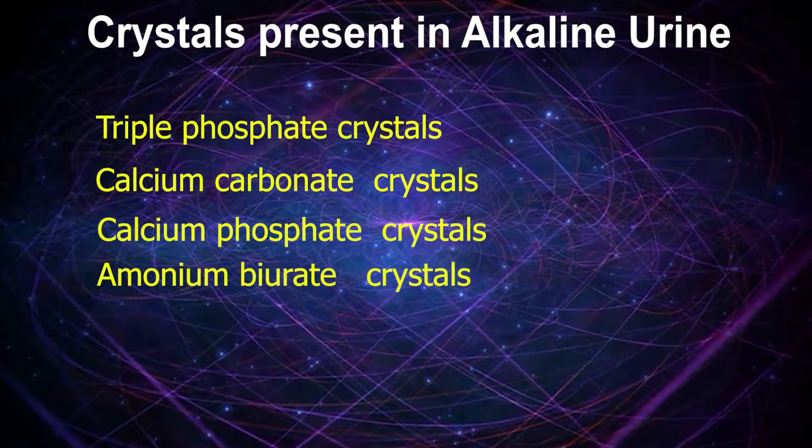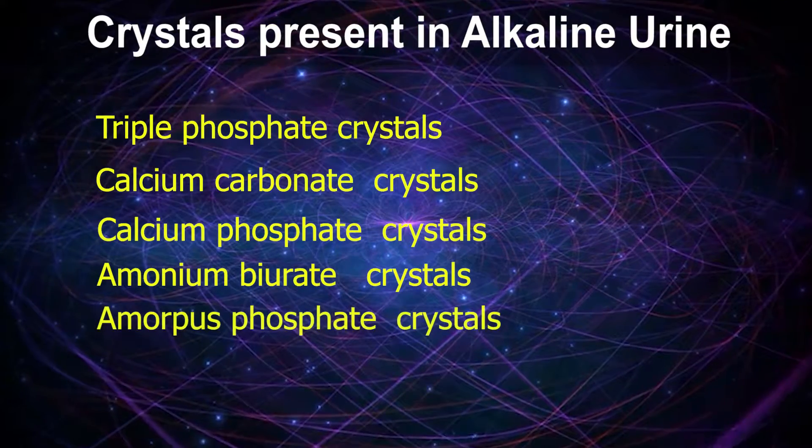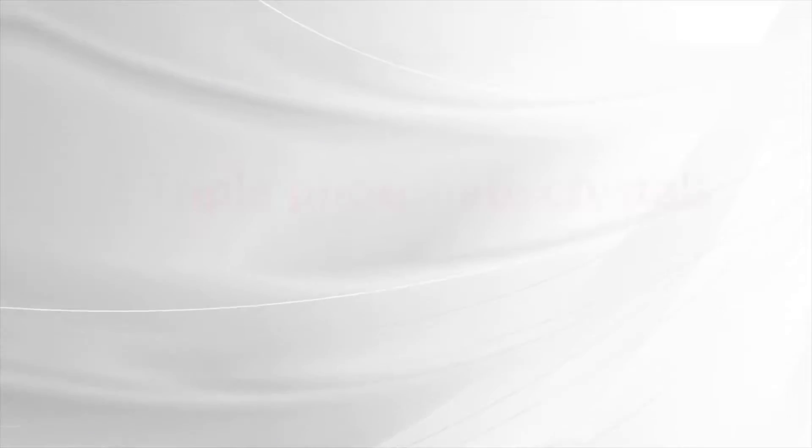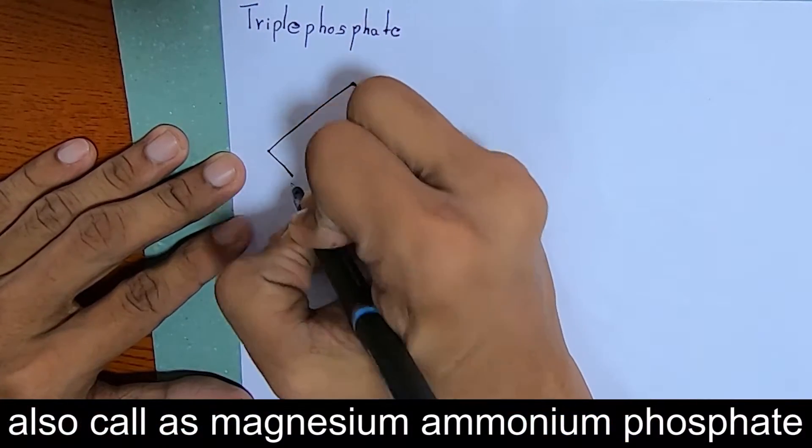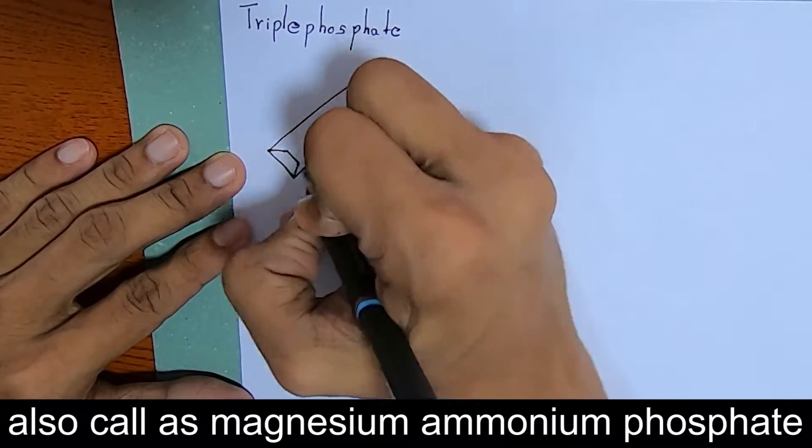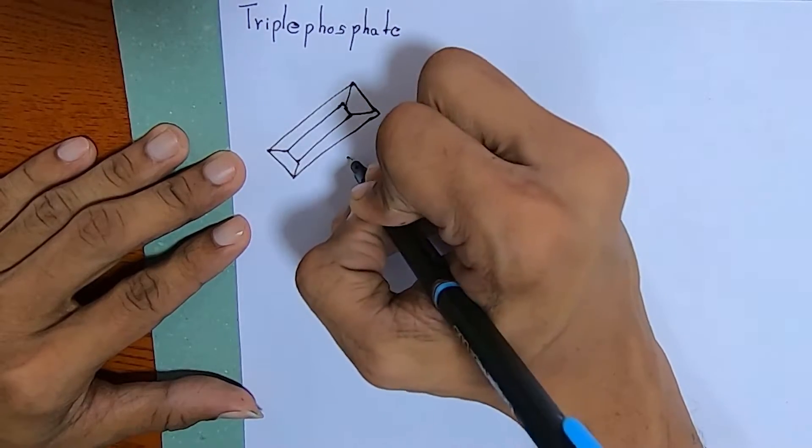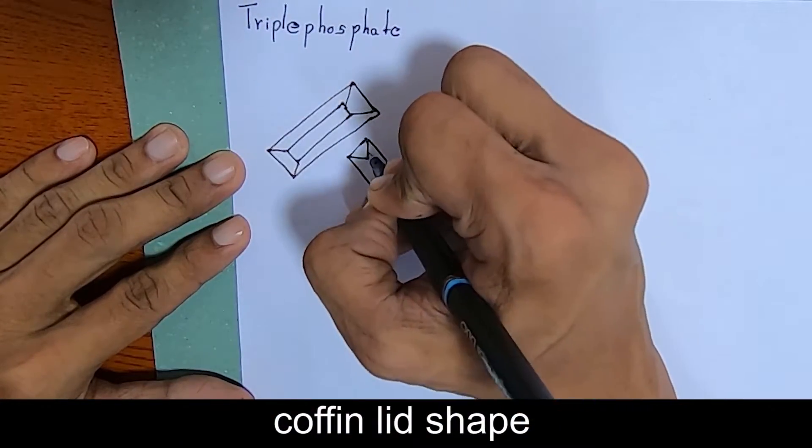Triple phosphate crystals are also called magnesium ammonium phosphate crystals, which present as coffin lid shape.